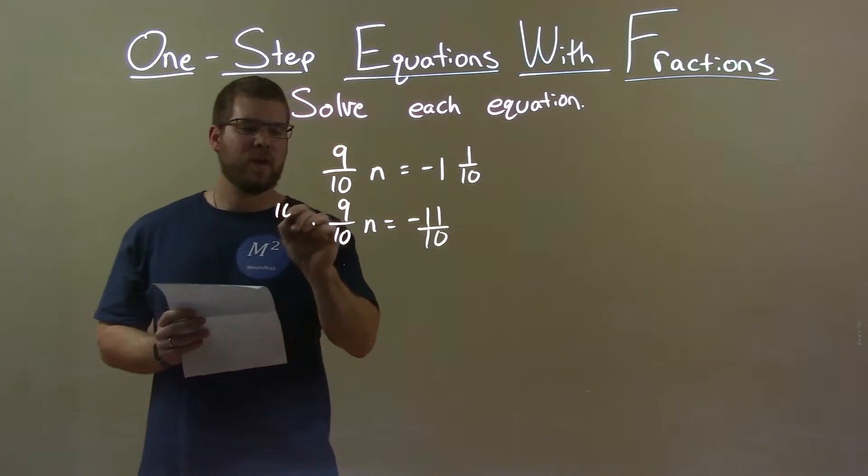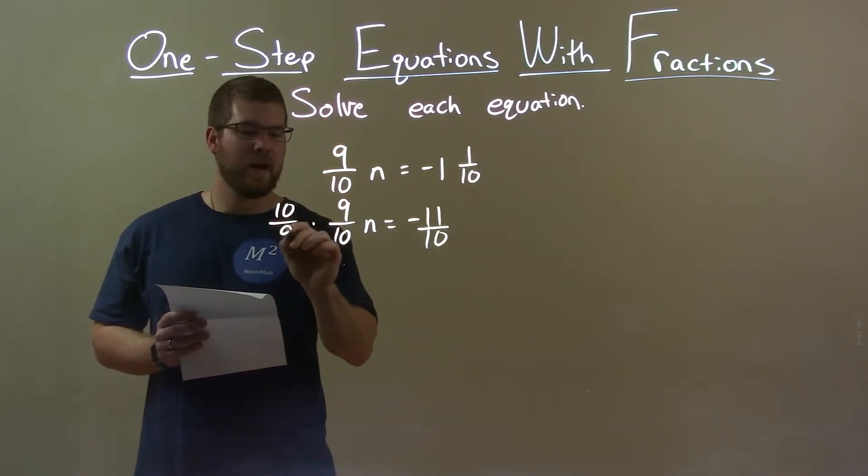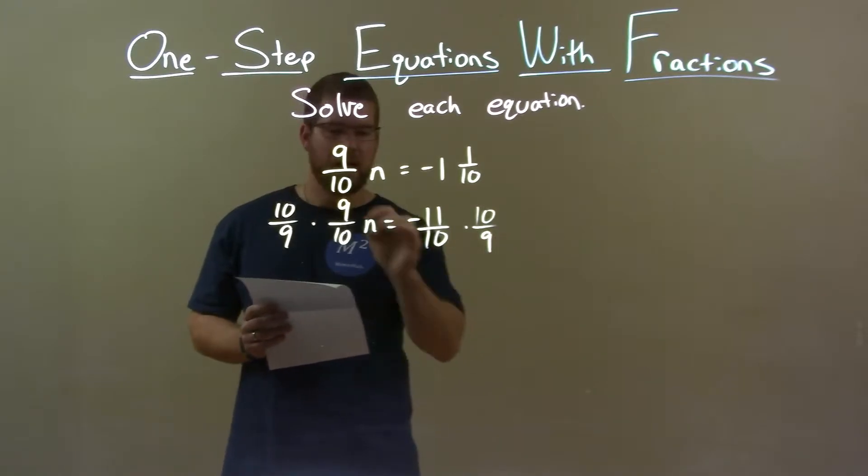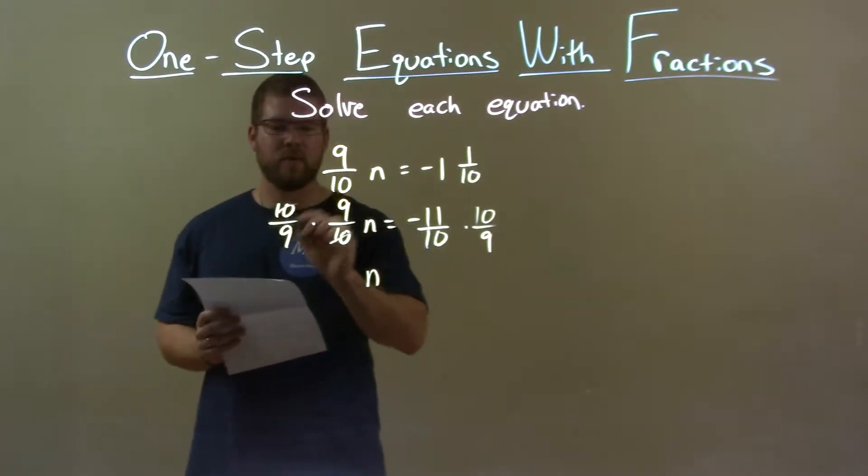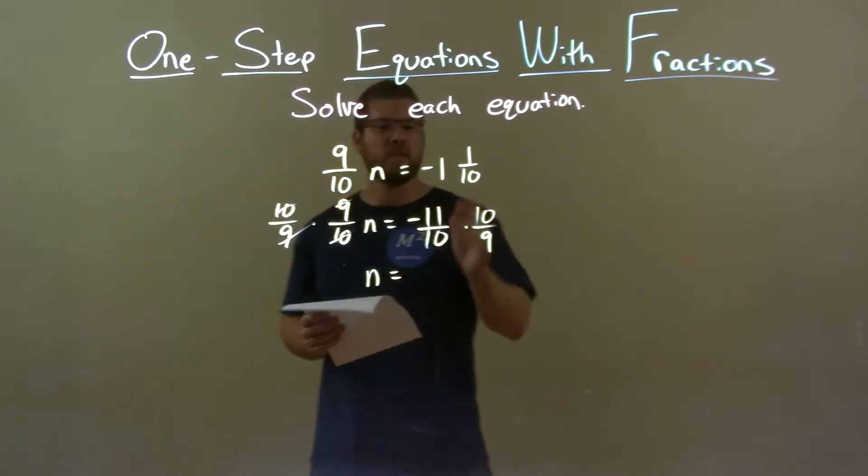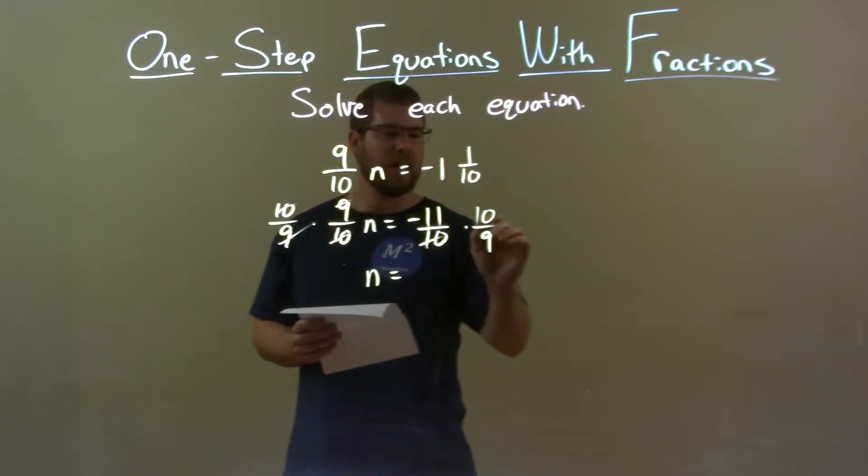Now I can multiply both sides by 10 over 9 and this gives me n by itself on the left, right? This all cancels out. That's the whole point of multiplying both sides by the reciprocal. Simplify this, right? The tens can cancel.